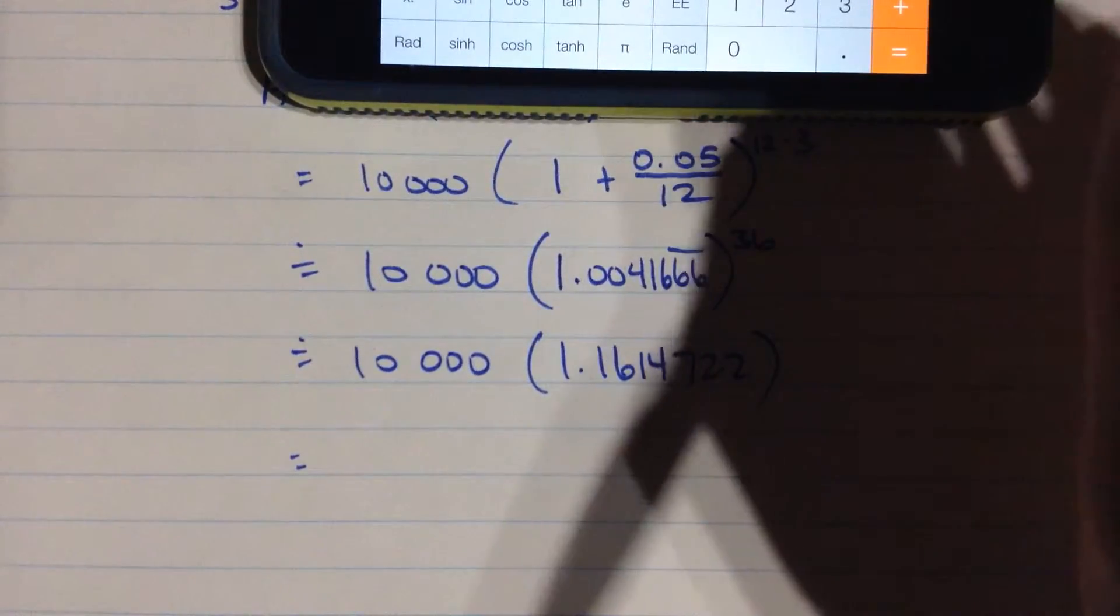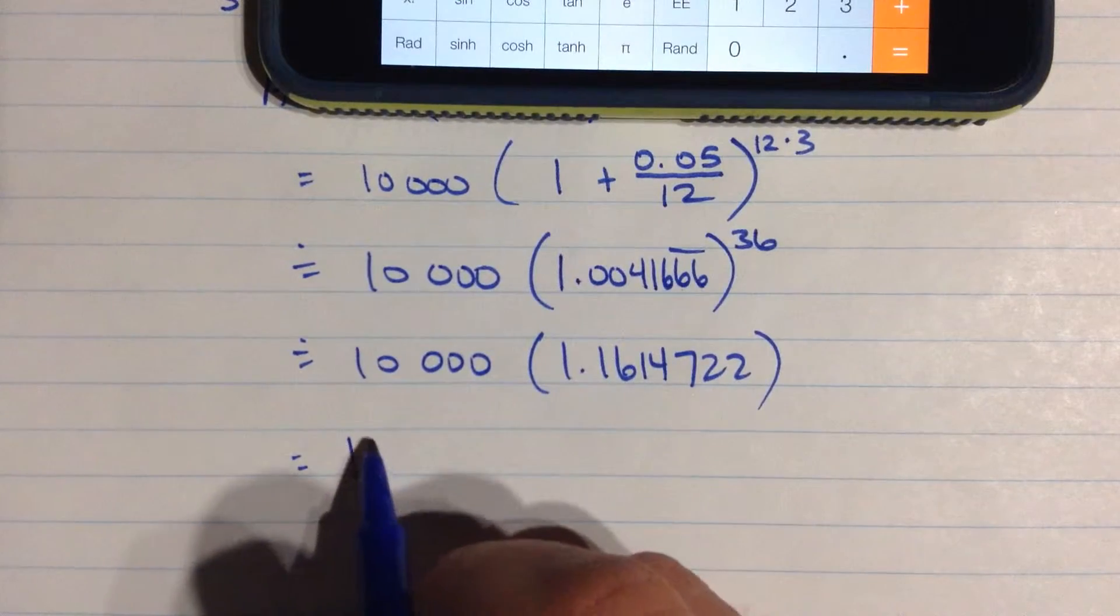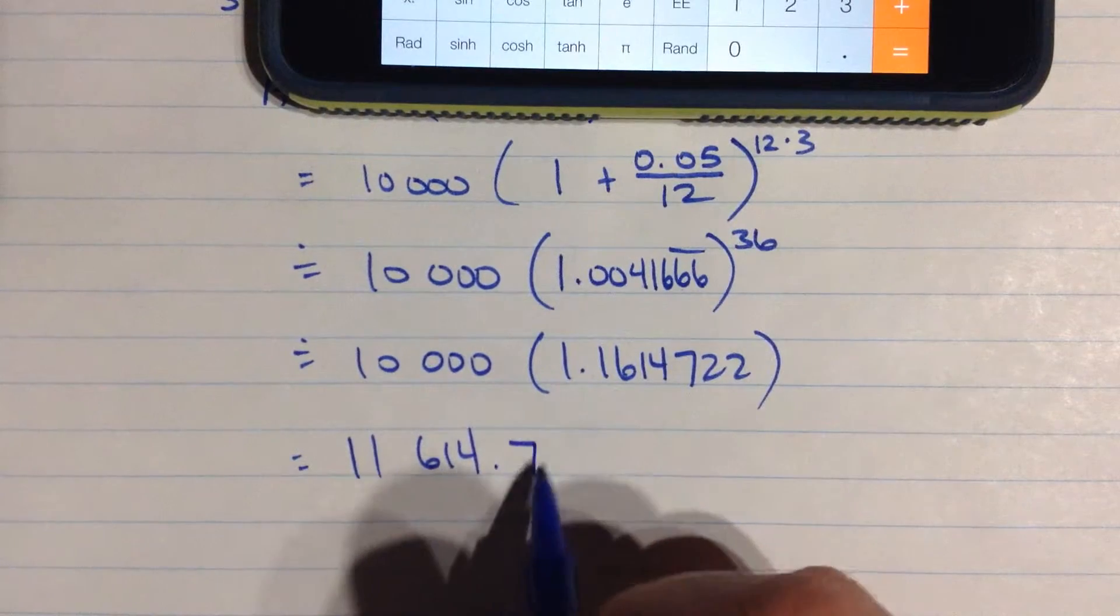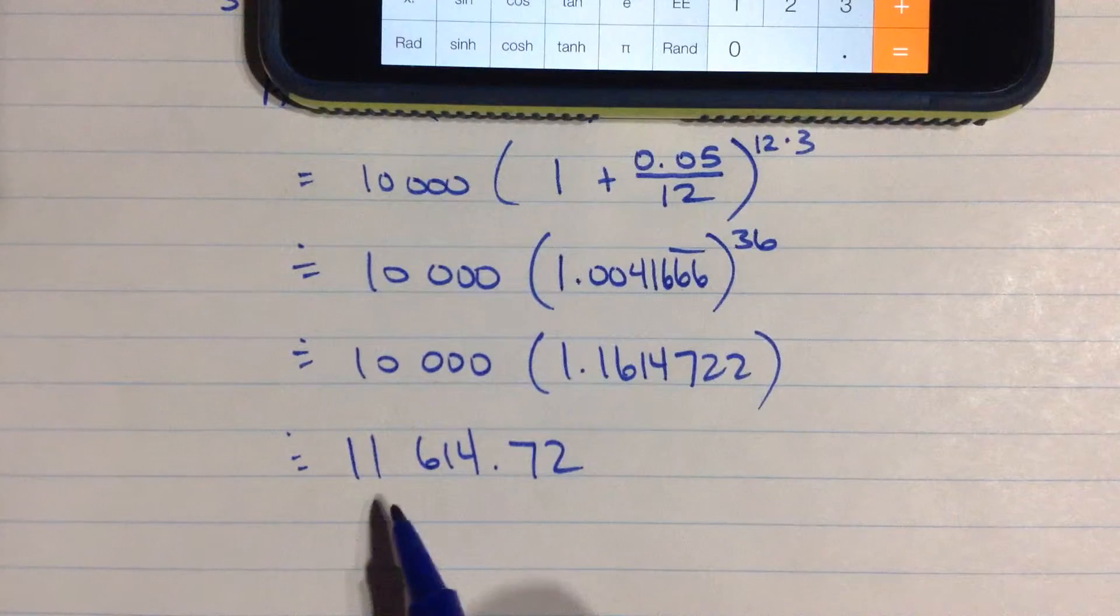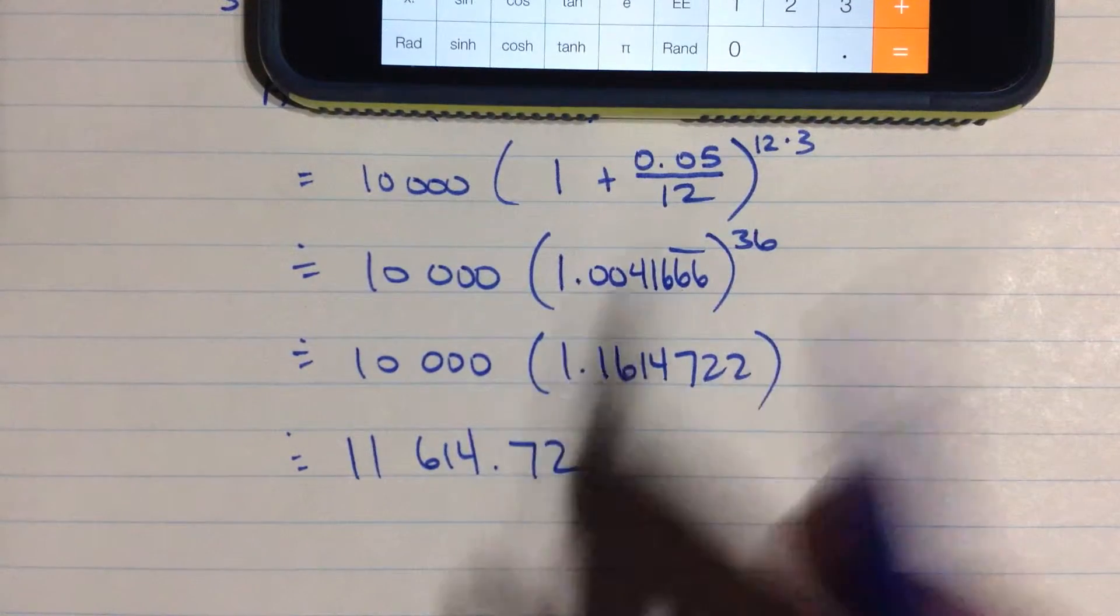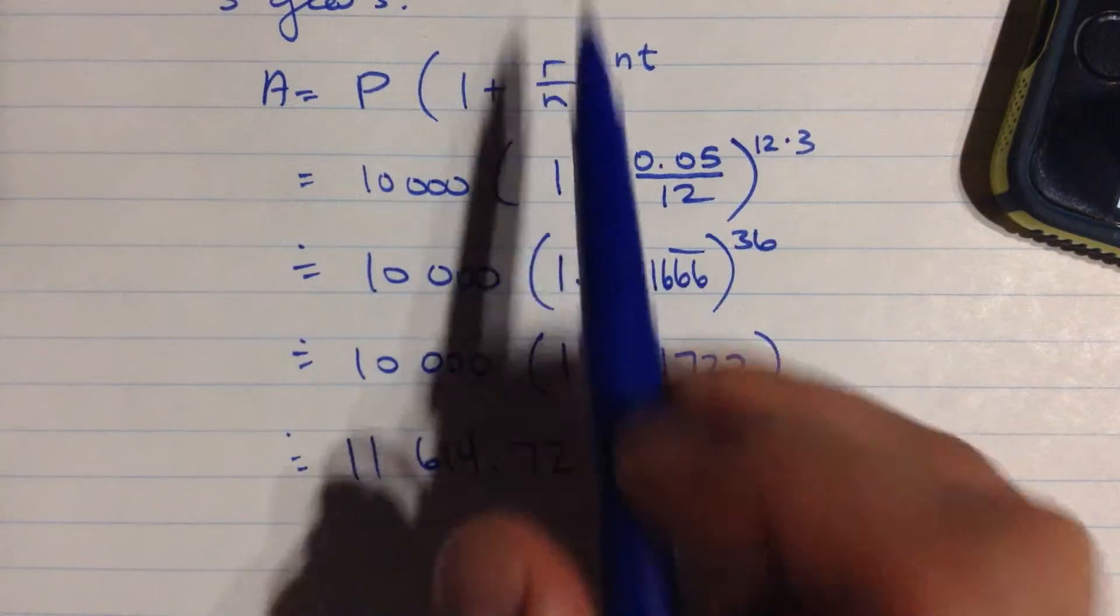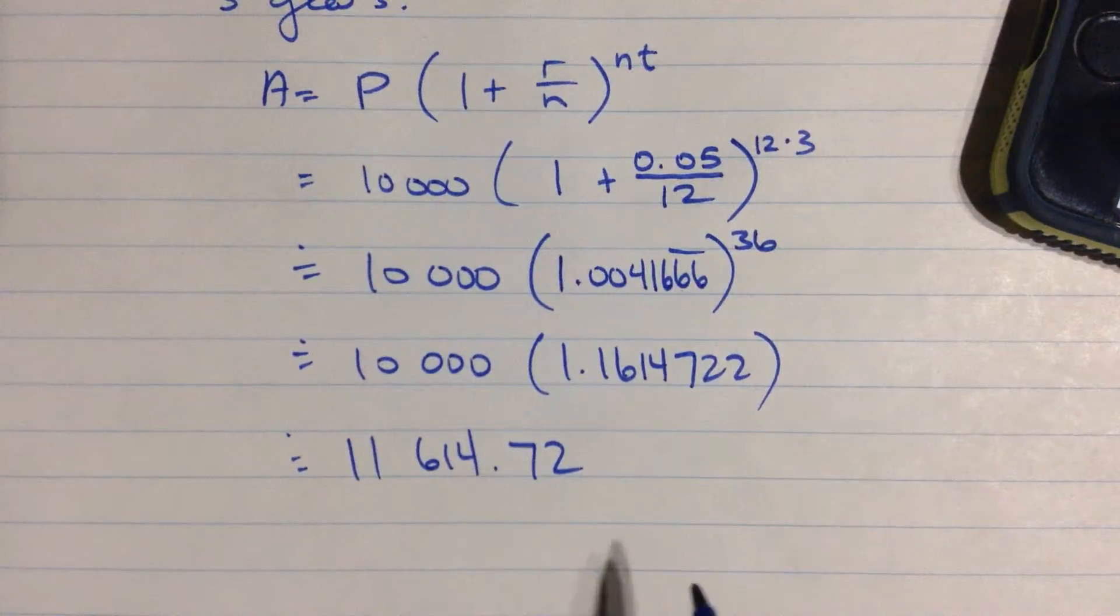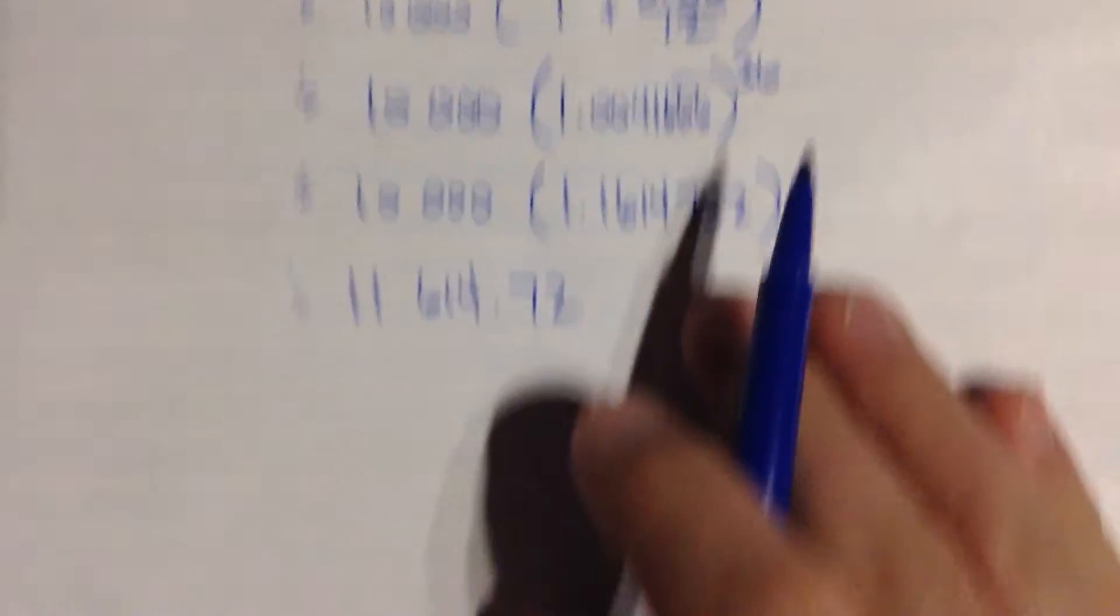And then to finish this off, I'm going to multiply that by 10,000, which is just 1, 1, 6, 1, 4, 7, 2. So that's the dollar amount then, $11,614.72. So after three years, I started with $1,000. I'm going to owe an extra about $1,600 in interest.